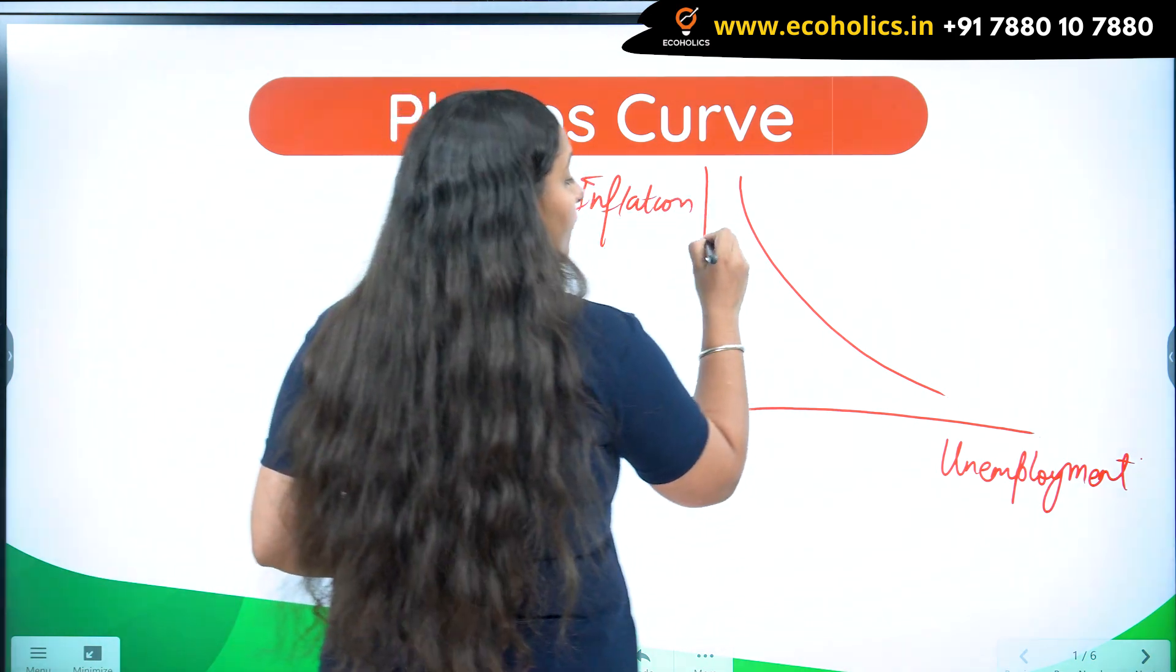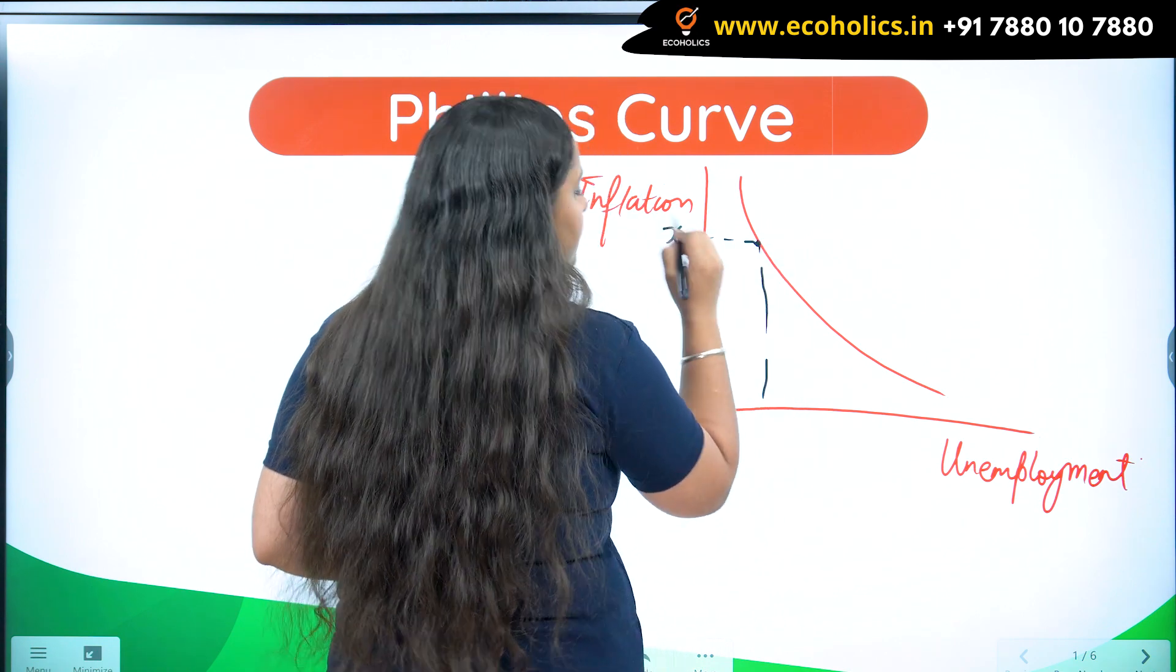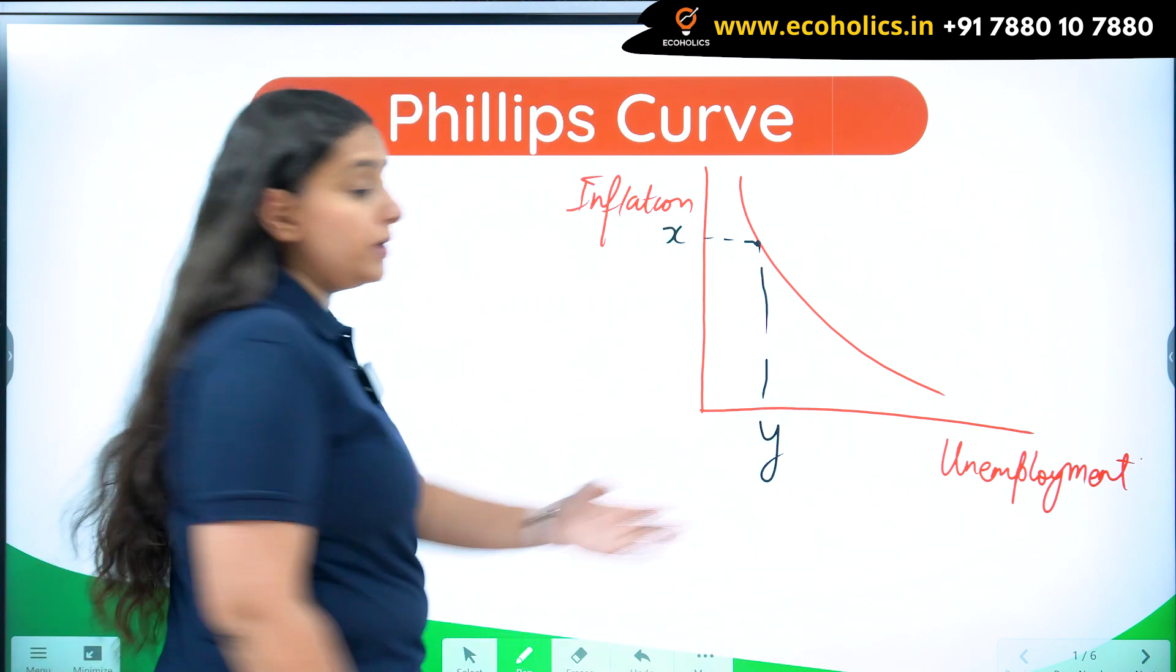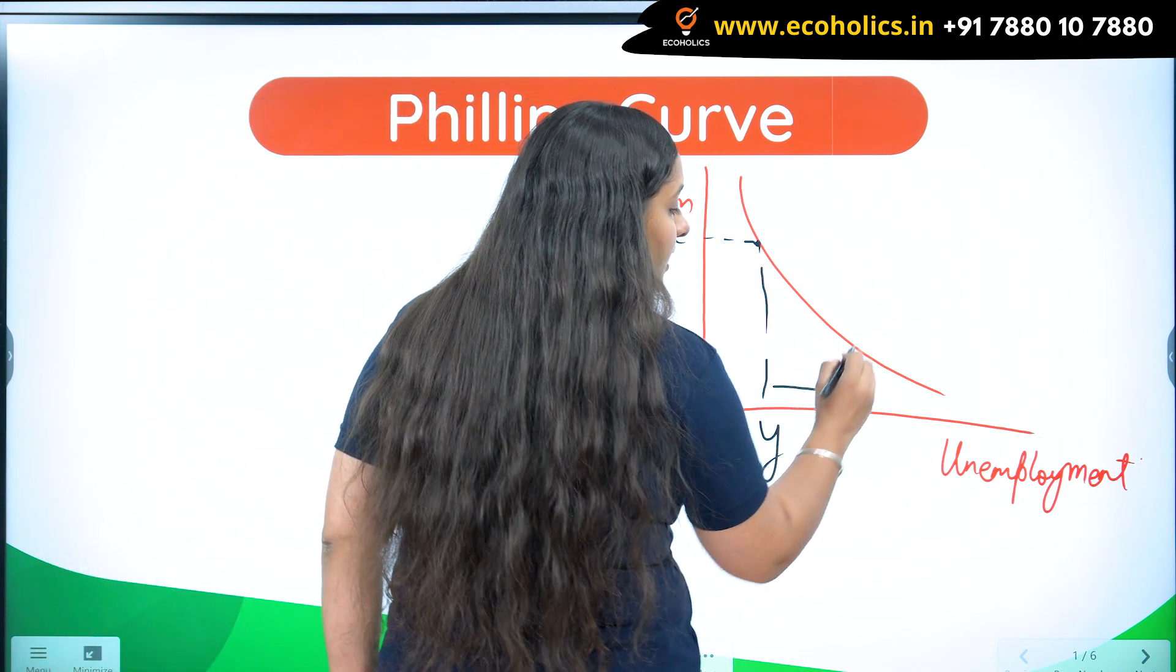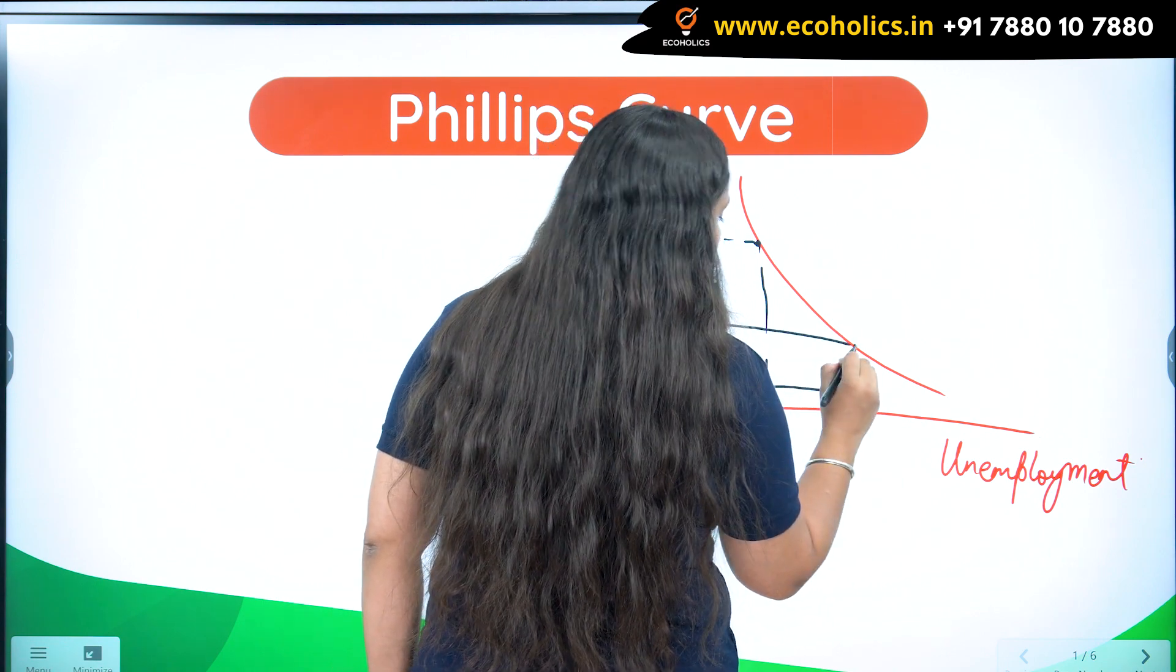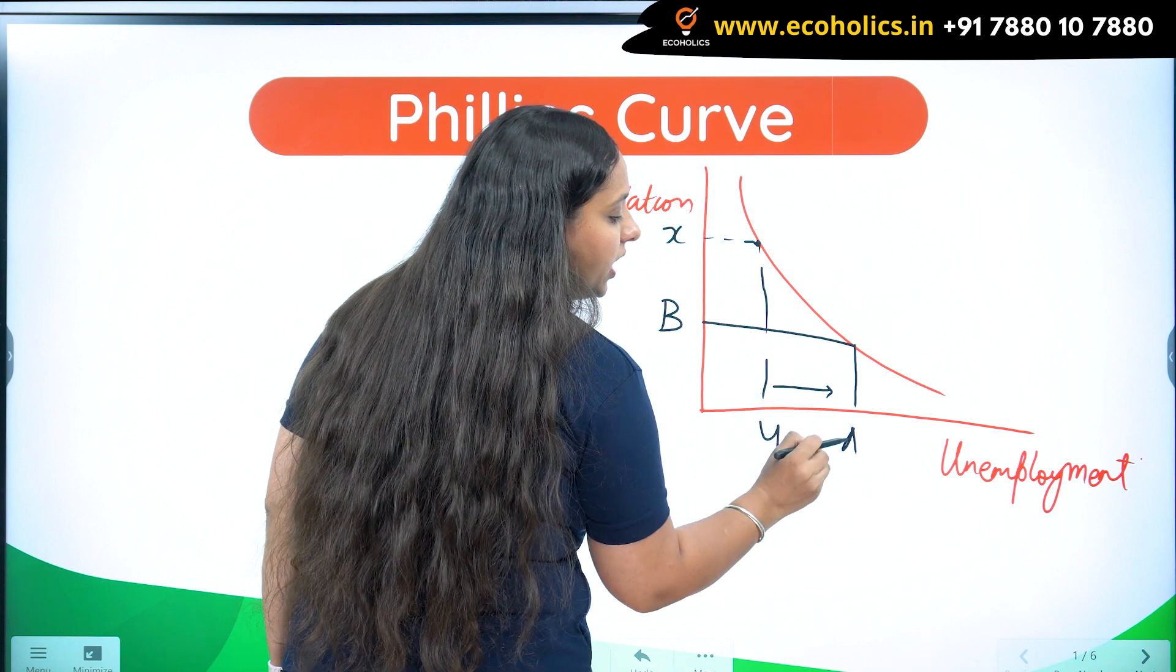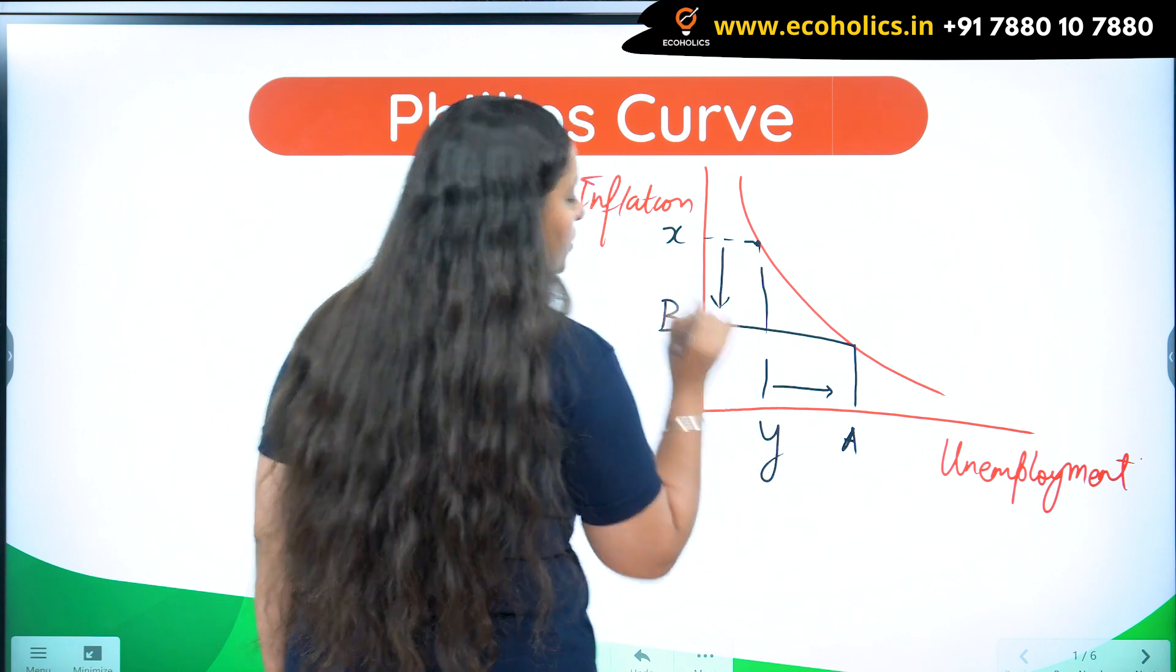If you're here at x percent inflation at y percent unemployment, if you increase unemployment to A, then inflation is going to come down to B. When unemployment is increasing, inflation is coming down.